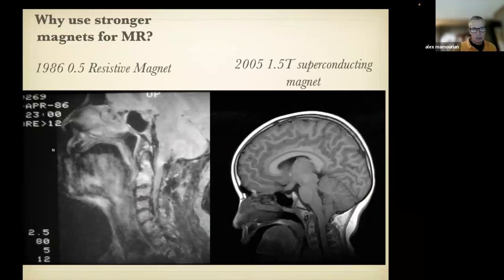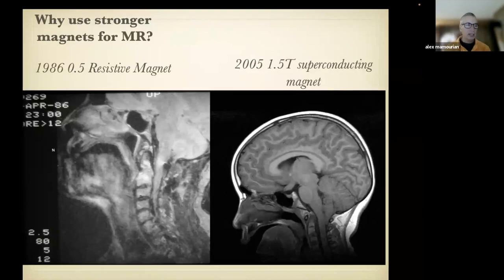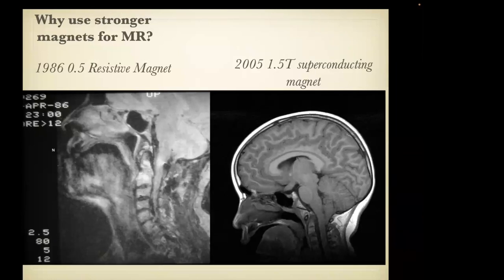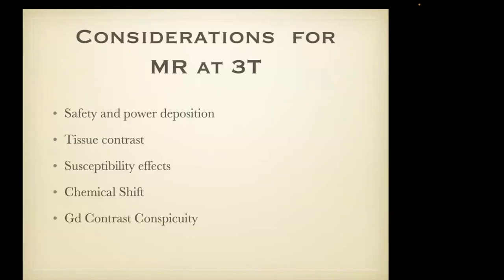This is two different patients, but the image on your left is a patient scanned in 1986 on a 0.5 Tesla resistive magnet — I don't think anyone is still using resistive magnets, but that's what we had at the early clinical use of MR. The image from 2005 is from a 1.5 Tesla superconducting magnet. More is better in this case, and there were a lot of benefits in going to 1.5 Tesla, but the logical extension to 3 Tesla was not as transparent.